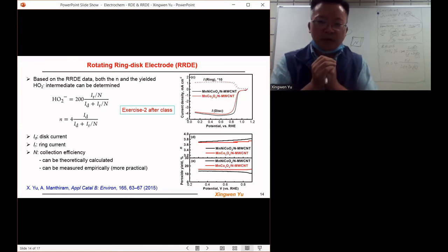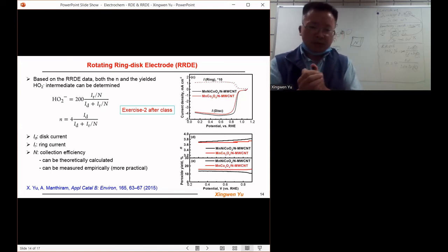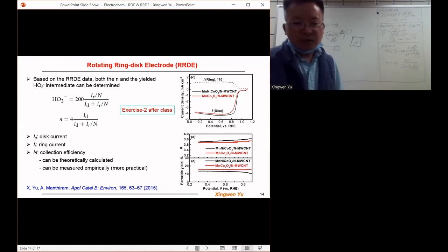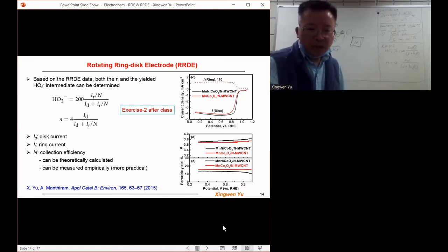For example, the charge transfer number N is not a fixed number. Just now, if we use RDE, the N number is a fixed number 3.8 or 3.9 or something. Here, the N number varies depending on the potential applied to the electrode.